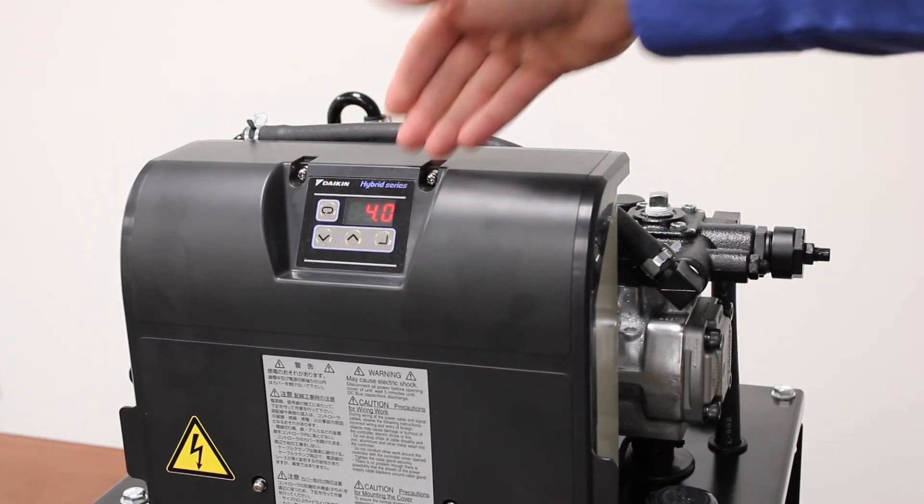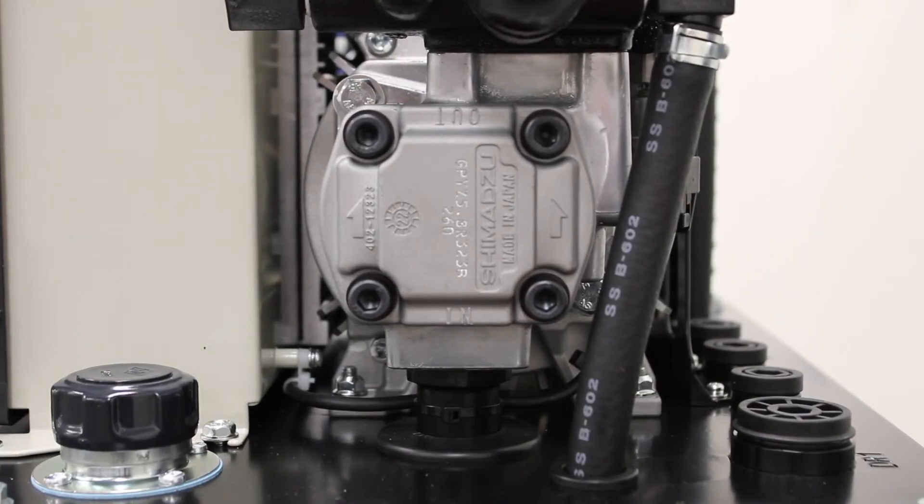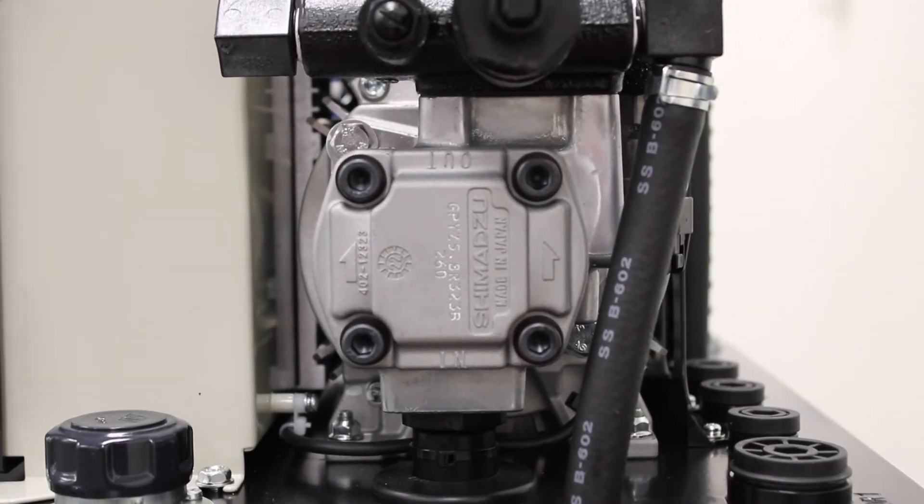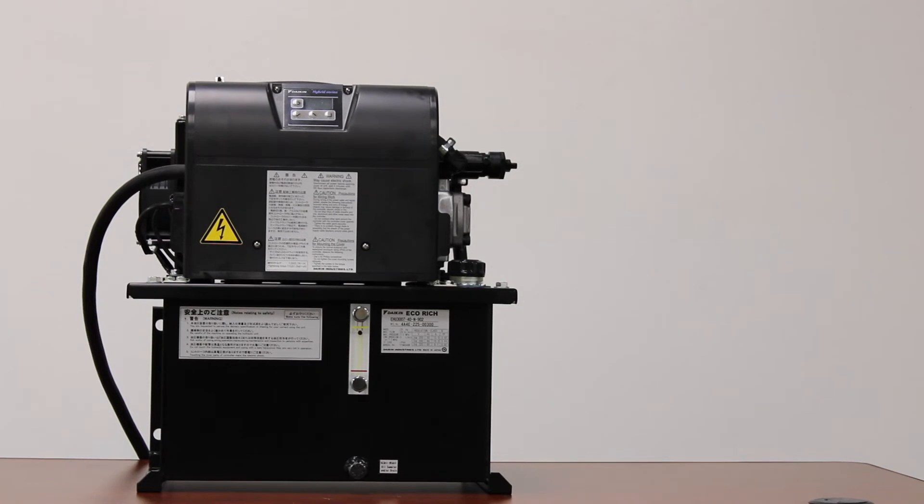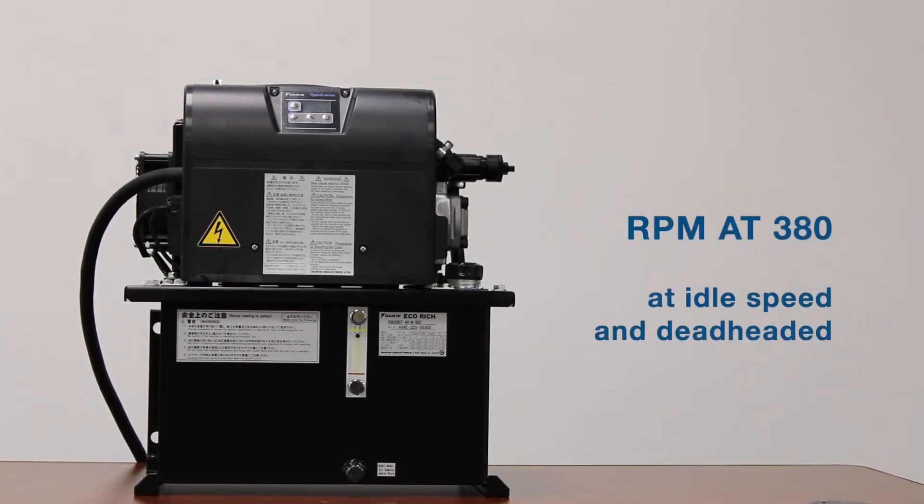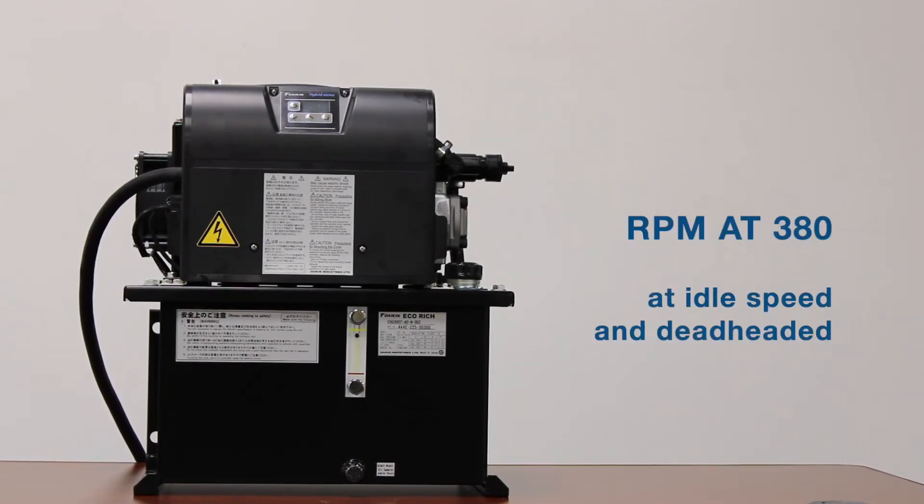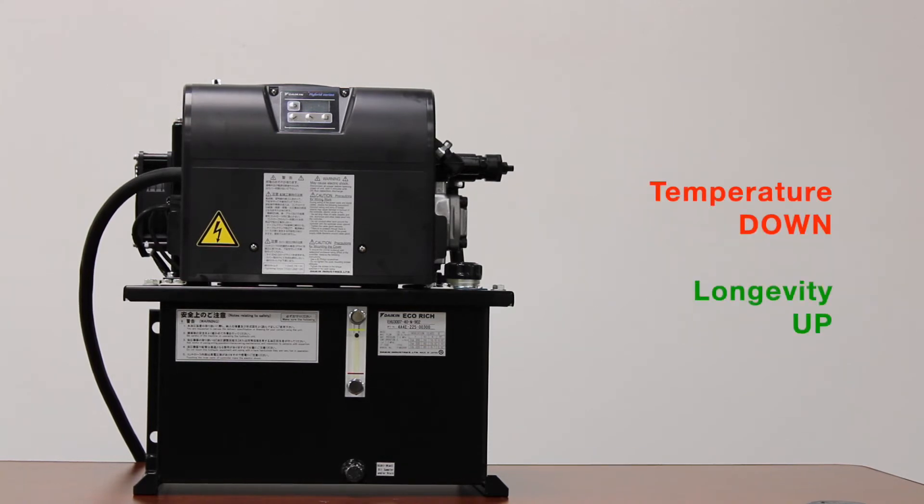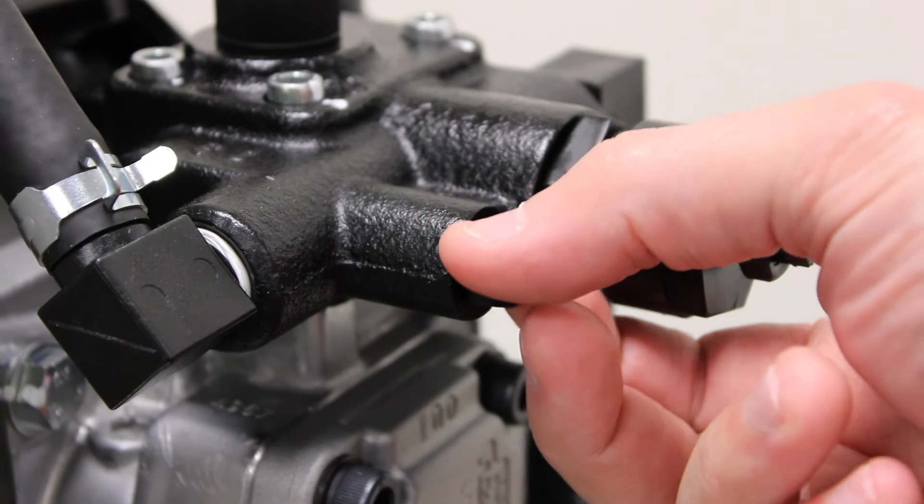Once you've made these changes, we can push the menu key and then it should go back to displaying your set pressure. After we've set our pressure and our flow, it's important we set the motor RPM. We want to keep the motor RPM around 380 when we're at an idle speed and the pump deadheaded to keep the temperature down and increase the longevity of this unit.